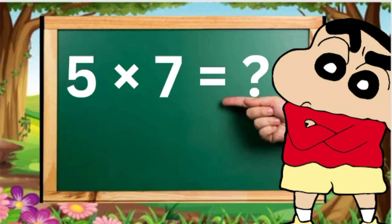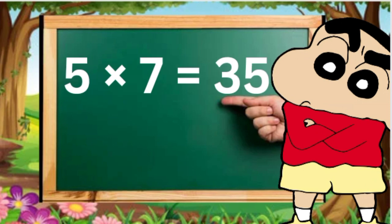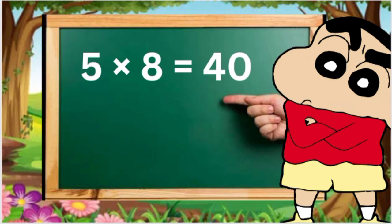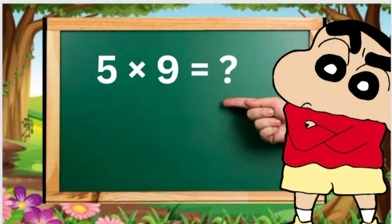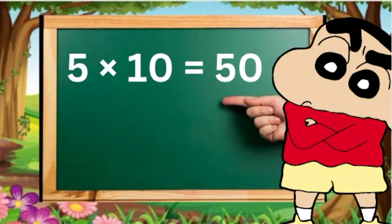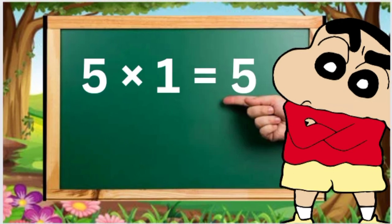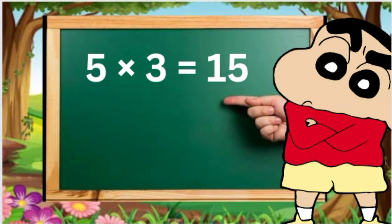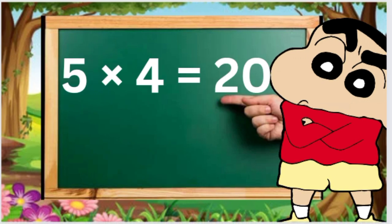5 7s are 35, 5 8s are 40, 5 9s are 45, 5 10s are 50. 5 1s are 5, 5 2s are 10, 5 3s are 15, 5 4s are 20, 5 5s are 25.